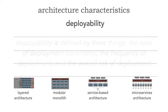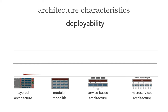If we take a look at three or four different architecture styles — a couple of monoliths and over to distributed architecture — we have the layered architecture, modular monolith, service-based, and finally microservices. If we look at the various characteristics of deployability between all of those, we see kind of an interesting curve. Let's talk about this curve.